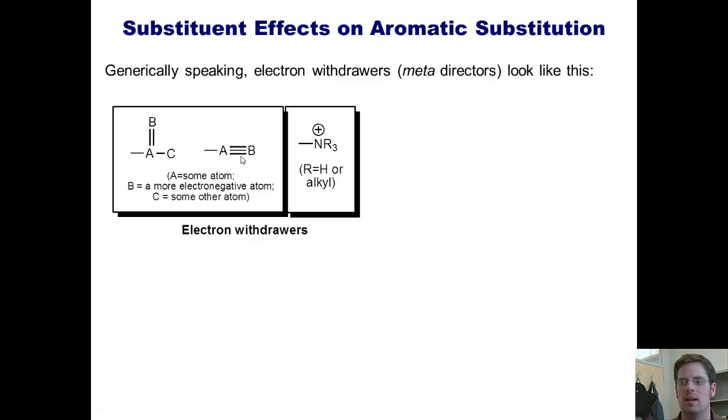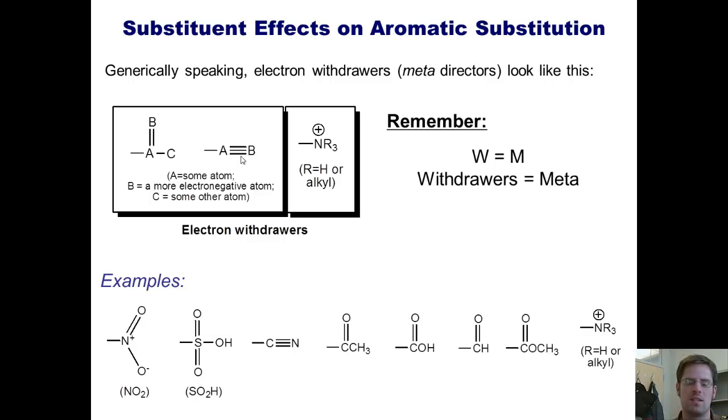This is what electron withdrawers look like. They suck electron density out of a ring. So what's a good way of memorizing that withdrawers are also meta directors? By remembering that W equals M. I realize this doesn't make any sense, but if you can remember that a W is really an upside-down M, then you can remember that withdrawers are meta directors. Here, once again, is our list of examples of meta directors.